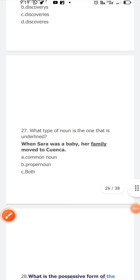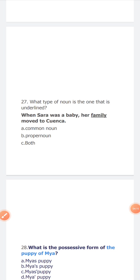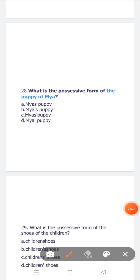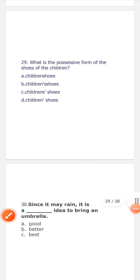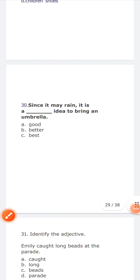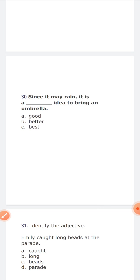What type of noun is one that is underlined? Family—family is a common noun. What is the possessive form of puppy of Maya? It is Maya's puppy. What is the possessive form of shoes of the children? Children's shoes. Since it may rain, it is better idea to bring an umbrella.